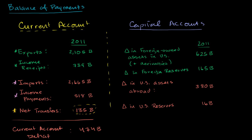In the last video we started to explore the payments that could flow into a country or out of a country, and now I want to continue. We focused on the current account last time, which covered things like trade, exports and imports, income earned from assets in another country, or income that someone from outside the country earns from assets in the country we're studying, or just transfers that are happening.